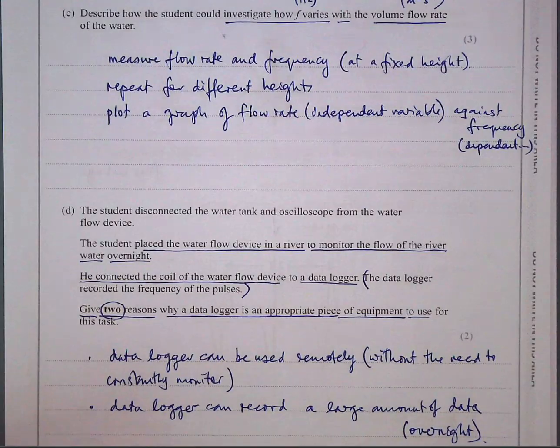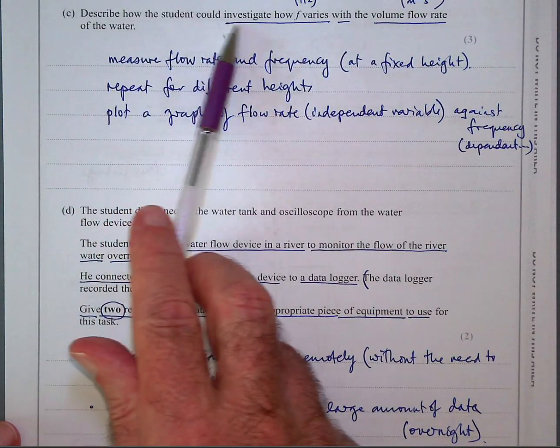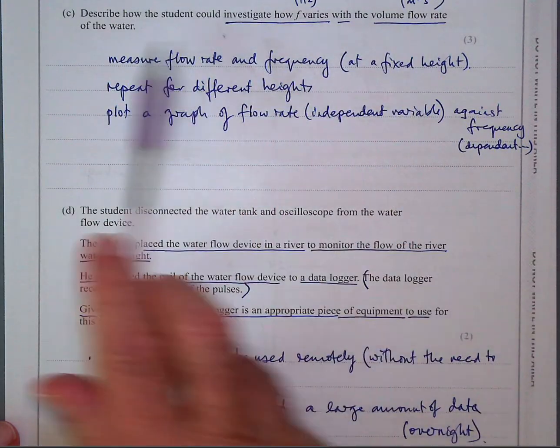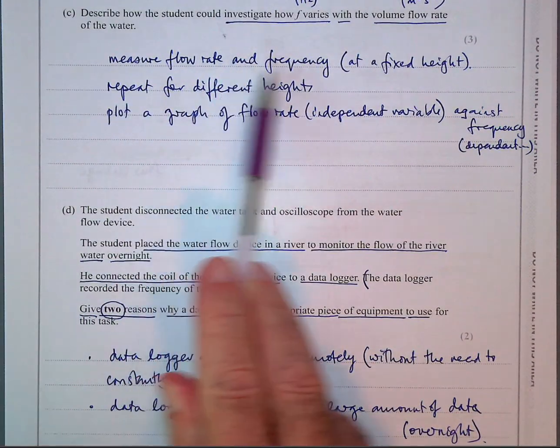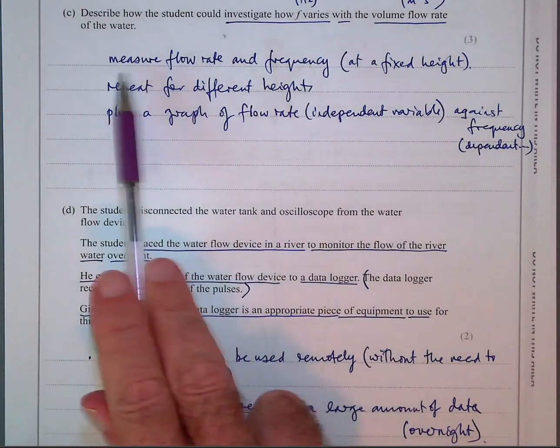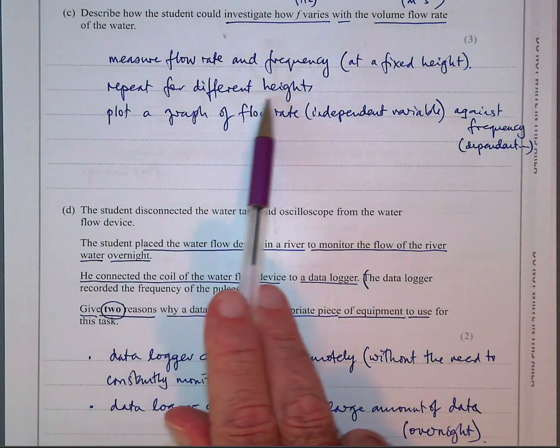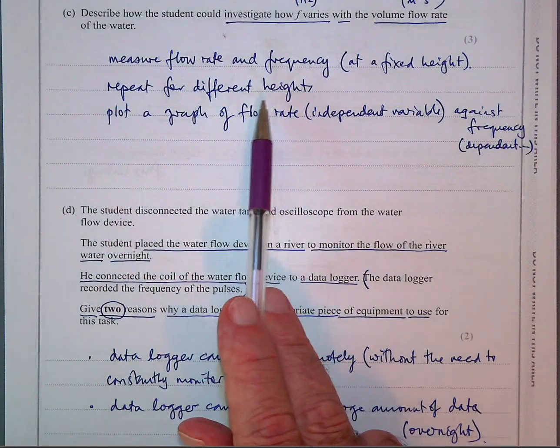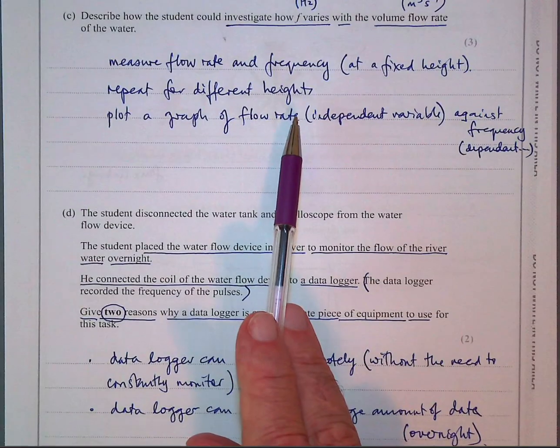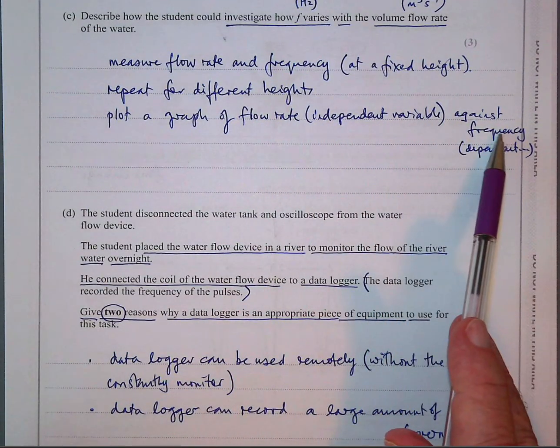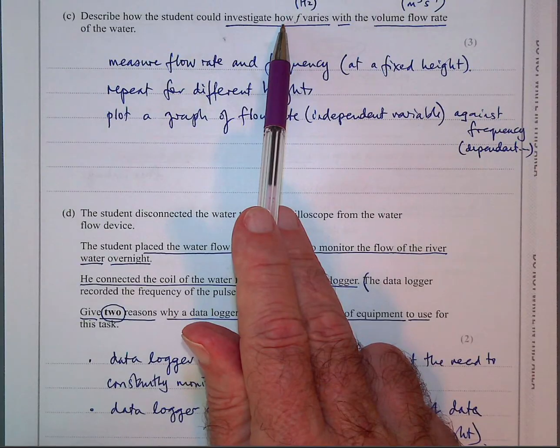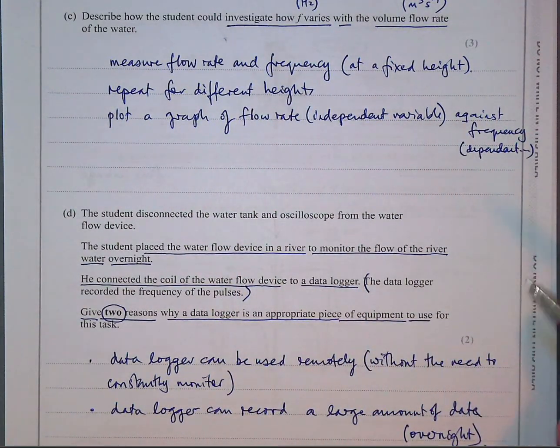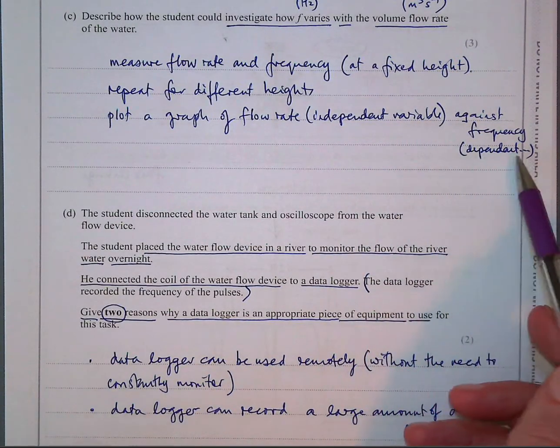So that's part B. Part C is now the investigation. So now you go into the investigation. Describe how the student could investigate how frequency varies with the volume flow rate of water. So measure the flow rate and frequency at a fixed height. So you could do it for the height that started. But then do it, repeat the process for different heights. So you're going to measure the flow rate the way we did it in part A. And then you plot a graph of your different flow rates at different heights, the independent variable against the frequency. So you're going to plot the flow rate because you want to know how the flow rate affects the frequency. So you can then plot a graph of the two against each other, the independent variable and the dependent variable.